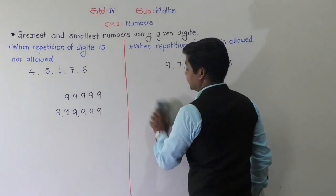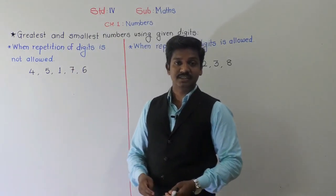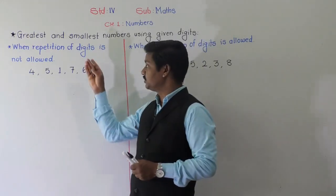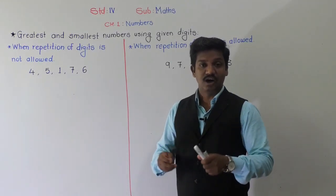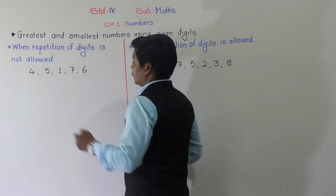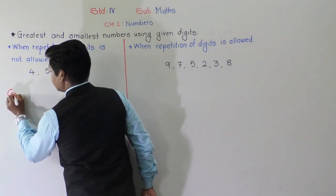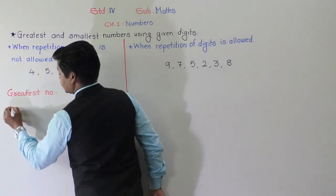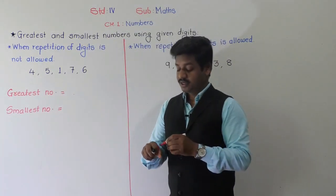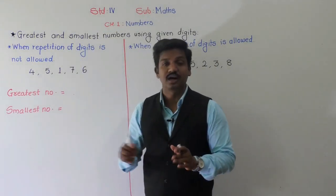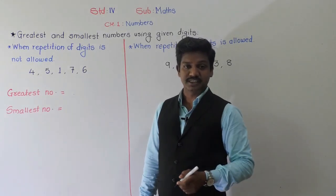Now we will learn the first condition. The question will be: form or make the greatest and smallest five-digit number using the given digits when repetition of digits is not allowed. For example, five digits are given: 4, 5, 1, 7 and 6. Using these five digits, we have to form the greatest and smallest five-digit number. Repetition not allowed means you cannot repeat any digit — you must write each digit only once.